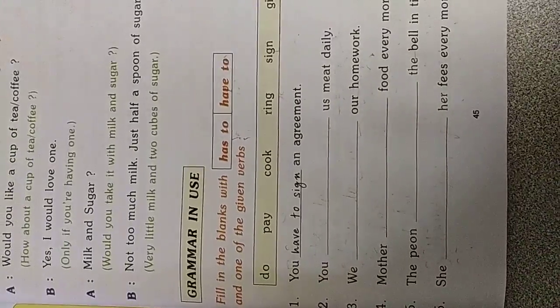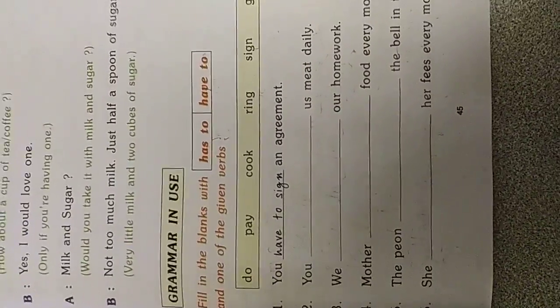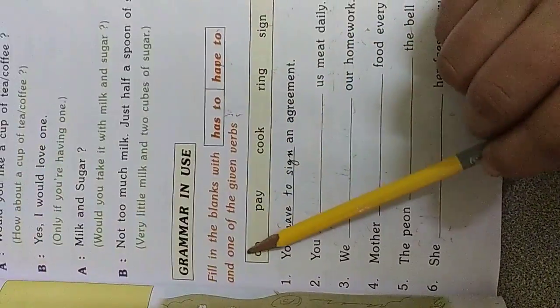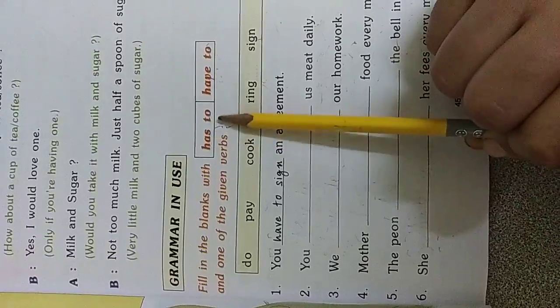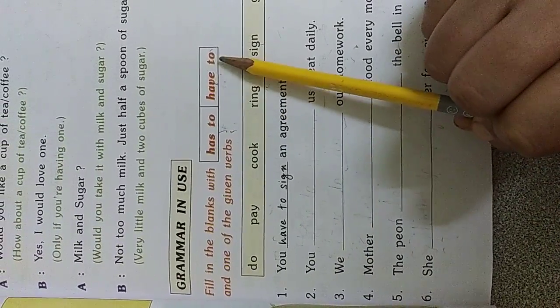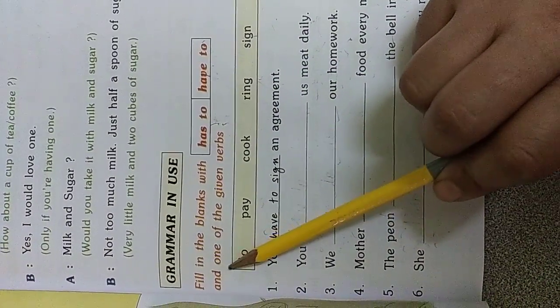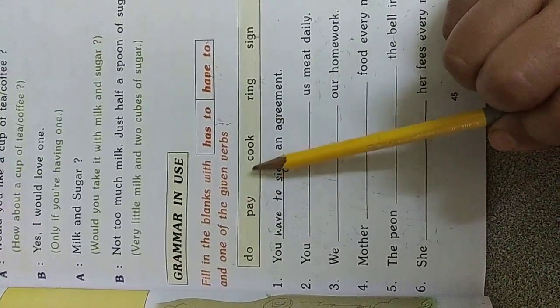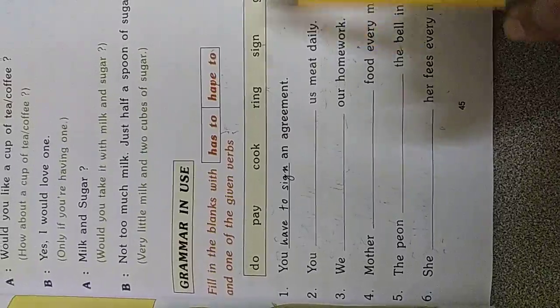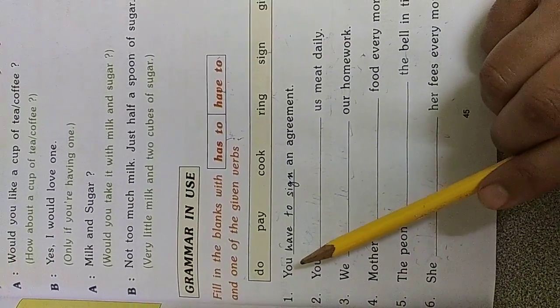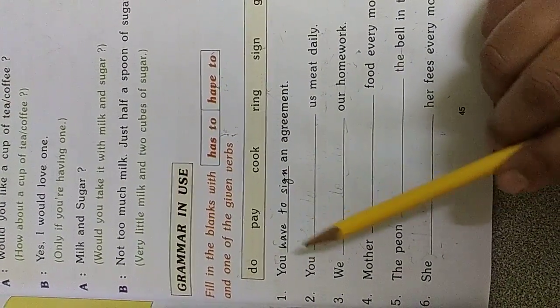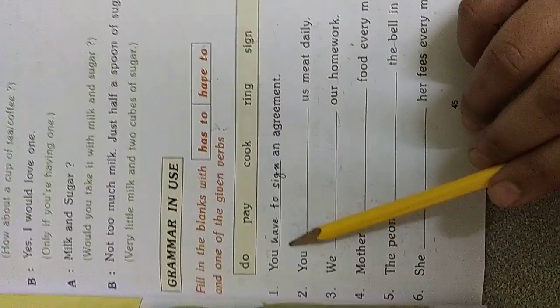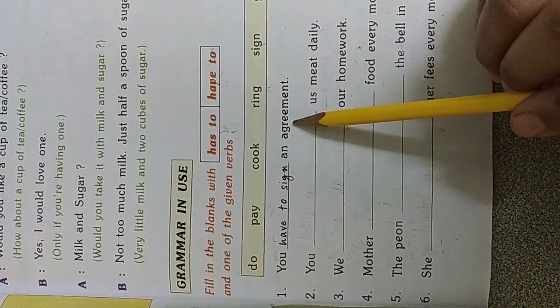Now let us come back to our grammar part. Grammar in use. Fill in the blanks with has to and have to and one of the given verbs. So, the first one they have done for us. The next we have to complete.